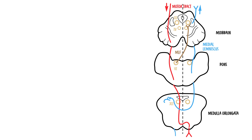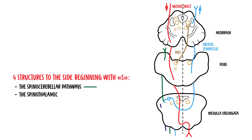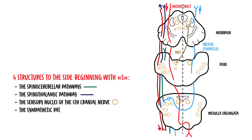The second rule is that there are four structures to the side, or lateral, beginning with S — S for sides. These structures are the spinocerebellar pathway, the spinothalamic pathway, the sensory nuclei of the fifth cranial nerve located laterally, as well as the sympathetic pathway.